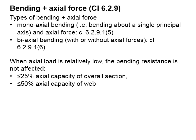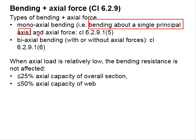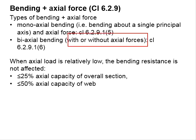There are two types of bending and axial force. The first condition is when mono-axial bending and axial force happen together — mono-axial bending refers to bending about a single principal axis. The second condition is bi-axial bending, meaning bending in both the YY and ZZ axes, which can happen with or without axial force.